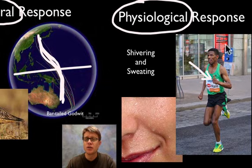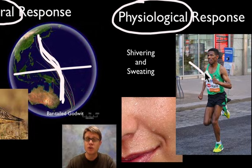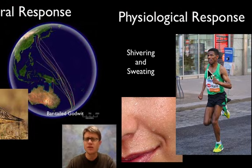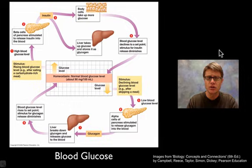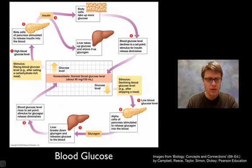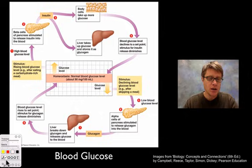A physiological response, on the other hand, is a response within the body. For example, this runner starts to get hotter and so begins to sweat and vasodilate — that would be a physiological response. Let's talk about the important ones you need to know in AP Biology.